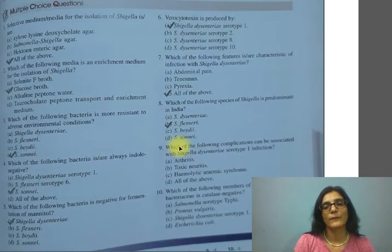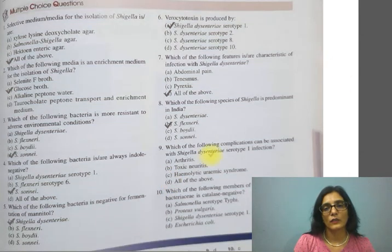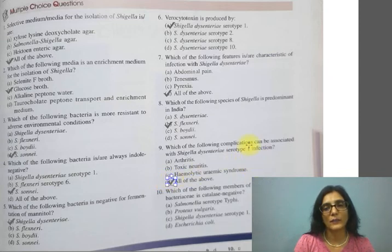Question 9: which of the following complications can be associated with Shigella dysenteriae serotype 1 infection? A) Arthritis, B) Toxic neuritis, C) Hemolytic uremic syndrome, D) All of the above. The correct answer is D, all of the above. All of these are complications when there is infection with Shigella dysenteriae serotype 1.